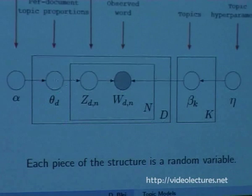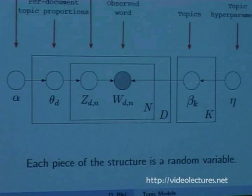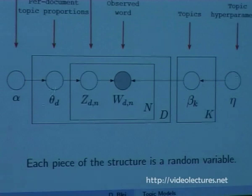Each piece of the LDA structure is a random variable. To understand it, work from the outside in. Beta_k are the topics themselves — each beta is a distribution over terms, and we have K of them. Beta lives on the vocabulary simplex — the space of all possible distributions — and I'm assuming beta comes from a Dirichlet distribution. Those are our 100 topics, in the K plate. Then we have the document plate: theta_d are the topic proportions — that cartoon histogram with pink, blue, and yellow bars. We have one of these for every document; it's in the D plate.